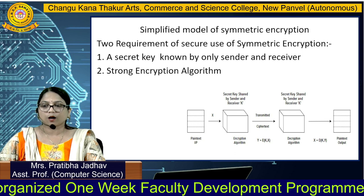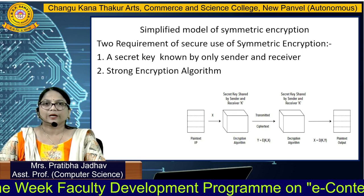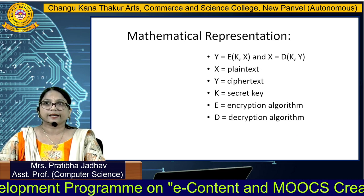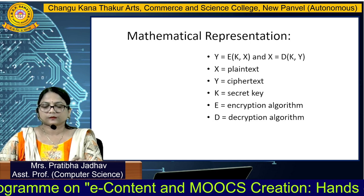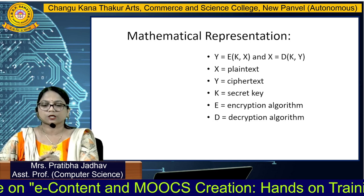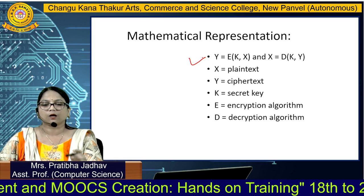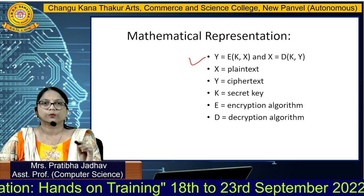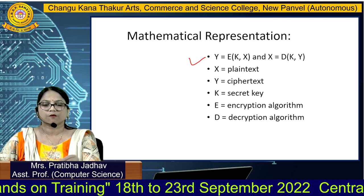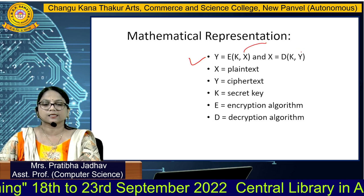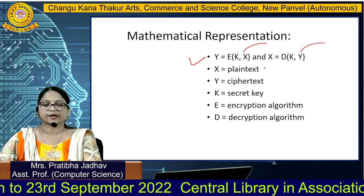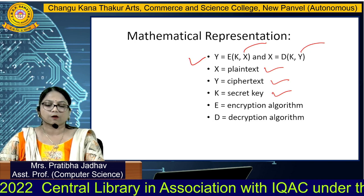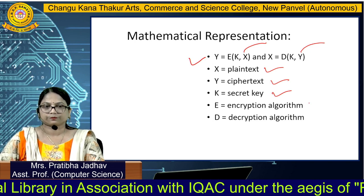This is all about symmetric encryption. In symmetric encryption, the mathematical representations are Y = E(K, X) and X = D(K, Y), where X is plaintext and Y is ciphertext. These are all the ingredients required for encryption and decryption. Thank you.